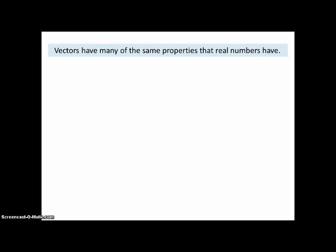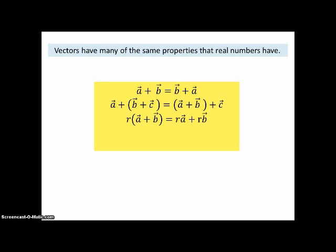Now, vectors have many of the same properties that real numbers have. For example, the commutative property of addition, the associative property of addition, the distributive property of multiplication of a scalar over the sum of vectors, and the distributive property of a vector over the sum of scalars, and the associative property of scalars times a single vector. Now, you'll notice that there's no multiplication of vectors here. That's because that's a little bit more complicated, and we'll deal with that in the next lesson.